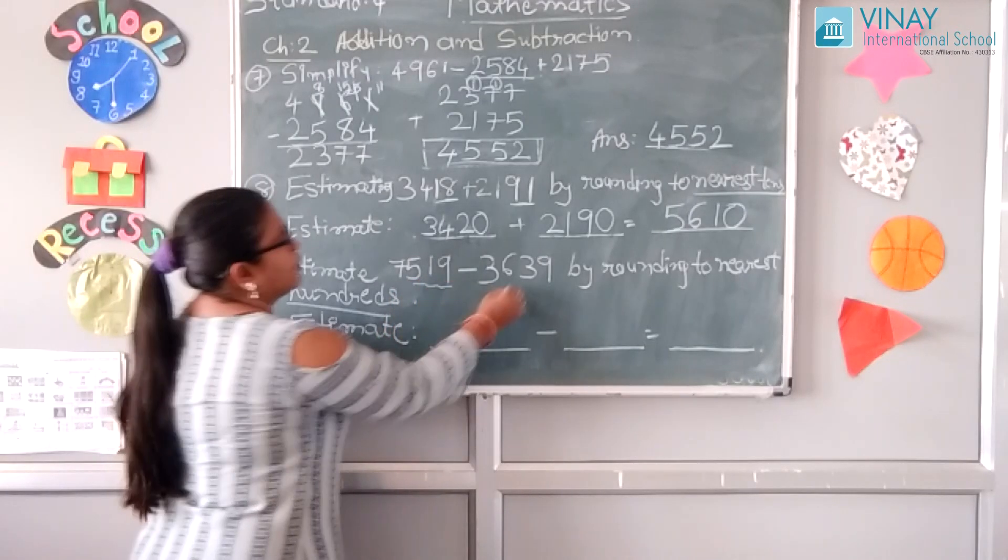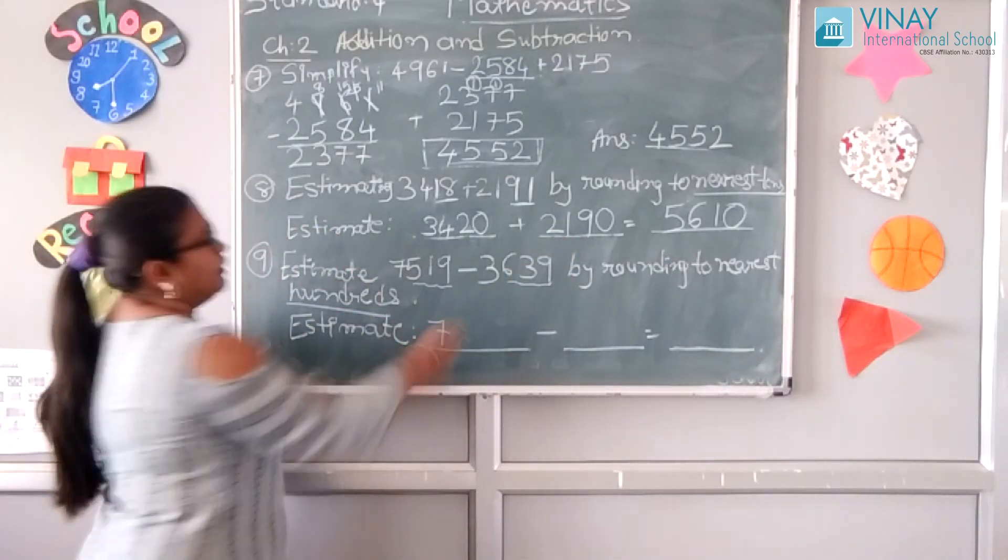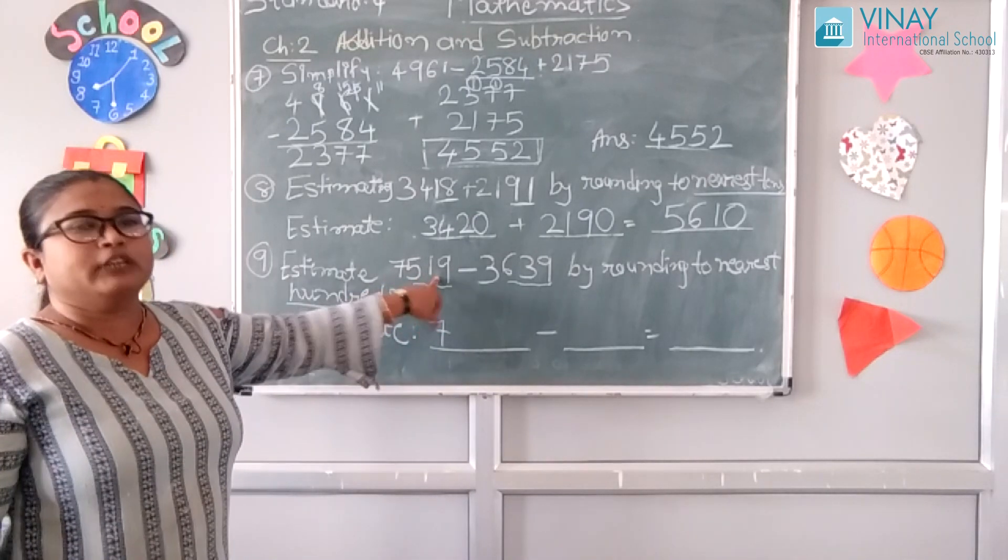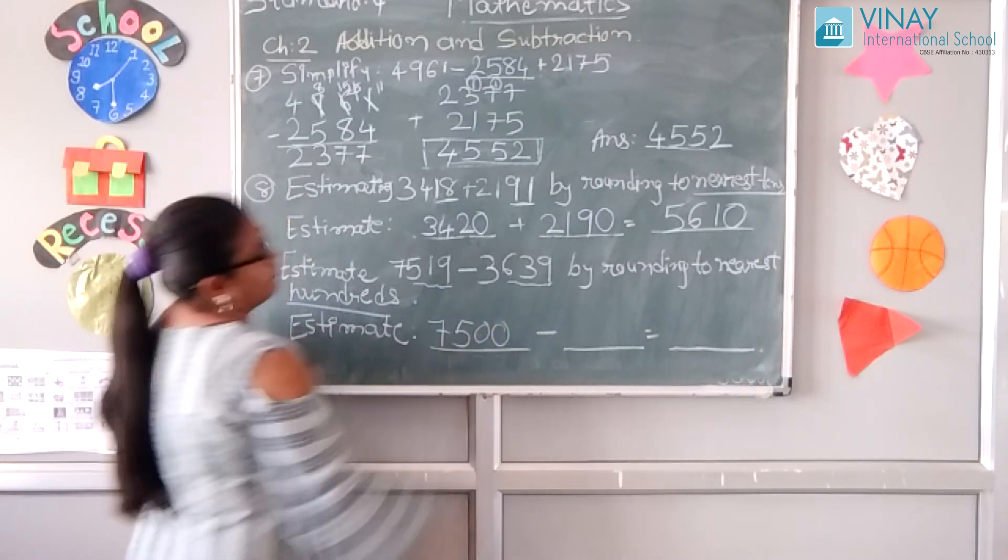Same reason, 7590. If it's 50 or more, we round up to 7600, but 590... so it's 7500.